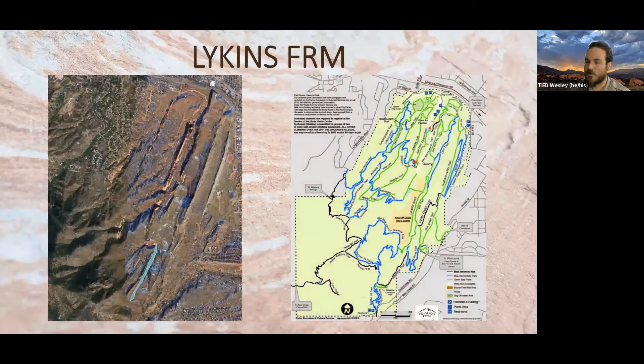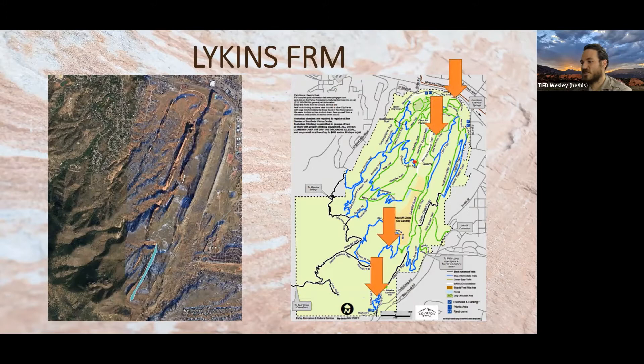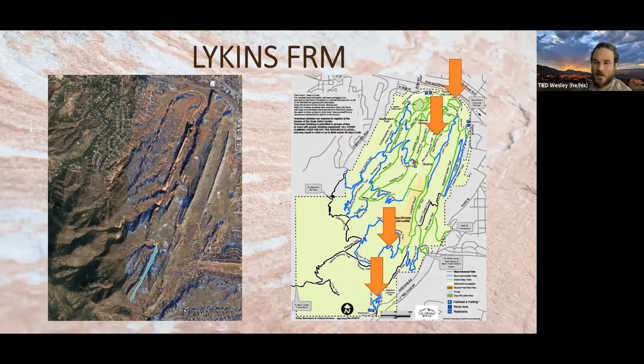Moving on to the Lykins Formation — the best place to look for it is a little hard to get to, but one of the first places is the Red Rock Rim Trail and the Red Rock Canyon Scenic Overlook Trail. It's beautifully exposed there. One of the easiest places to see it is right off of Highway 24 — in the road cut before you get to Red Rock Canyon, you'll see the Lyons Formation sandstone and then, to the east, the Lykins Formation.